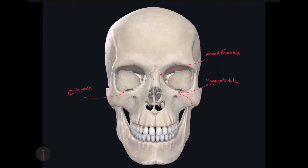If we divide the bony orbit into a top half and a bottom half — so this is more or less half of the bony orbit — and we go to the most lateral portion where this half-line intersects, that is called the ectoconchion. This is the most lateral portion of the bony orbit when you divide it into equal top and bottom halves.